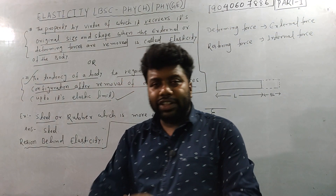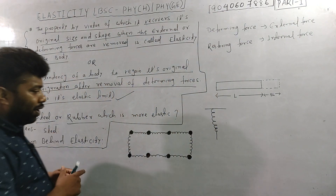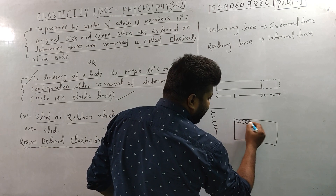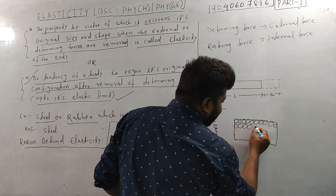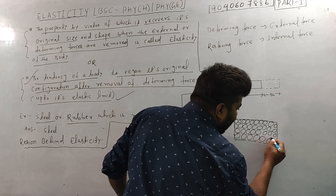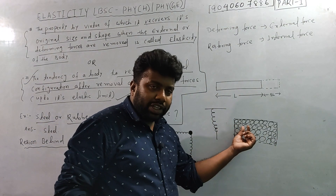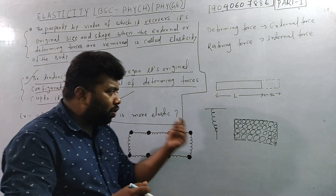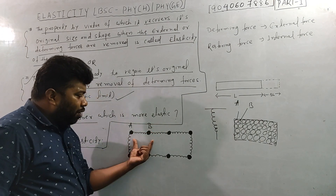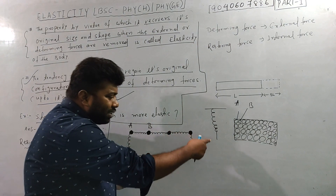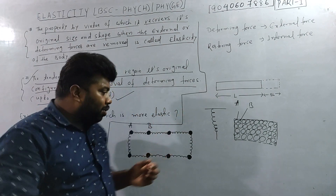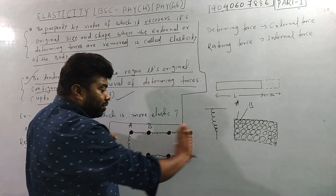The reason behind elasticity — in a solid, atoms are arranged and bonded to each other. The atoms in a solid are connected to each other in a spring-like structure. When A and B atoms have a spring-like structure between them, and you expand or compress the object, the spring-like inter-atomic structure will expand or contract accordingly and restore the original configuration.